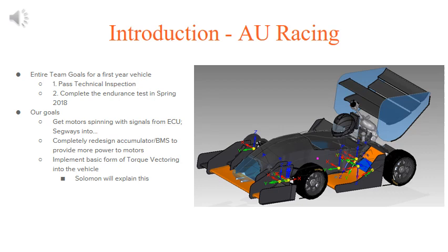However, as a senior design group consisting of three students, our goals are slightly different. Our goals consist of getting the motor spinning from signals with the ECU, which is the electronic control unit, which also segues into completely redesigning the accumulator slash BMS battery management system to provide more power to the motors, and third, implement basic form of torque vectoring into the vehicle. Solomon will explain this later on in the presentation.